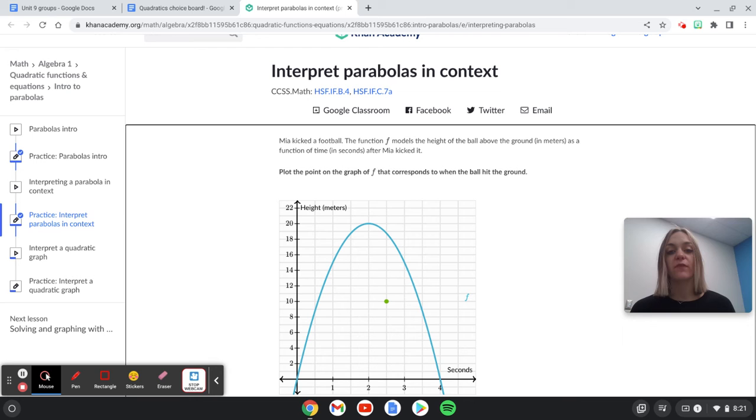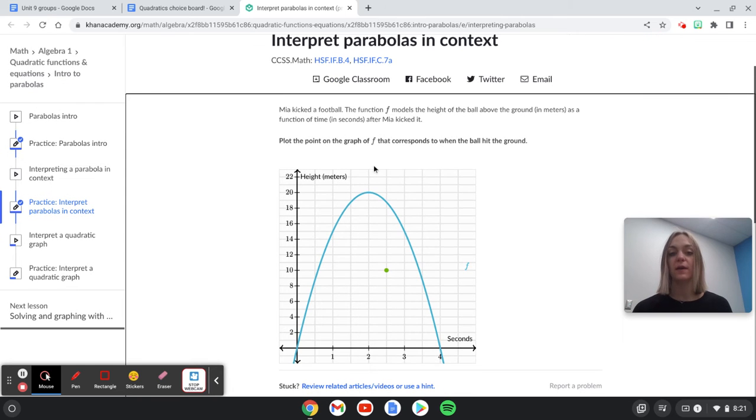So this says Mia kicked a football. The function f models the height of the ball above the ground in meters as a function of time in seconds after Mia kicked it. So x is seconds and y is going to be height in meters.